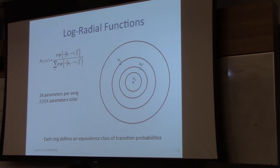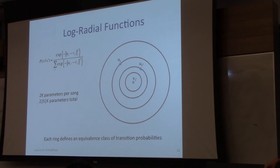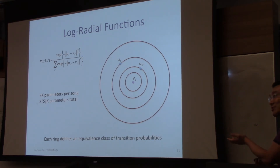Prior to training, we have a U and a V for every song — that's our probabilistic model of sequences of songs. Intuitively, let's say people like to listen to certain types of songs right after other types — after a sad song, they want to listen to a happy song. We want to learn an embedding such that happy songs' entry points are close to sad songs' exit points.